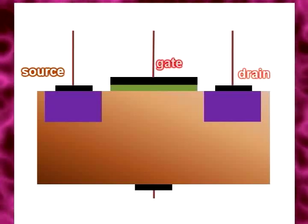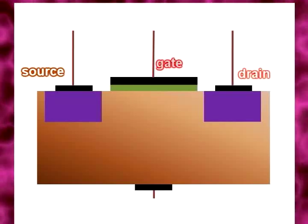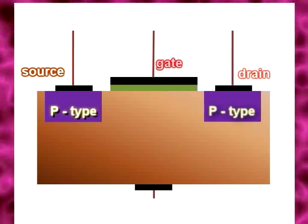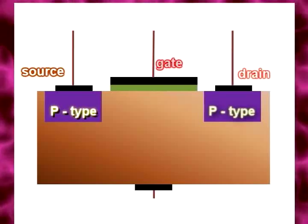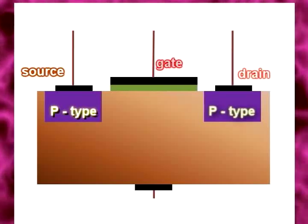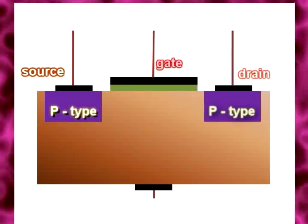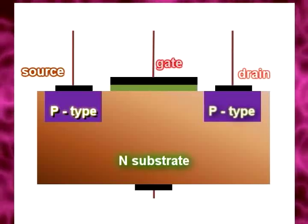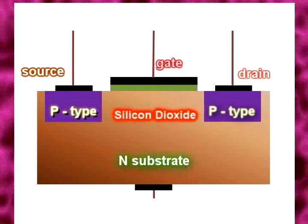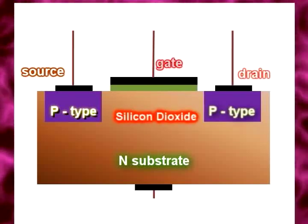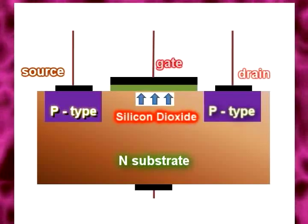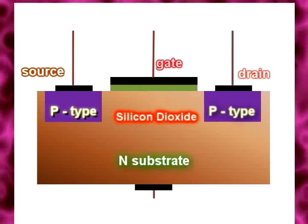The source and drain terminals are connected through metallic contacts to P-doped regions. A slab of N-type material is formed from a silicon base and is called N substrate. The silicon dioxide is present to isolate the gate metallic platform from the region between the drain and the source.